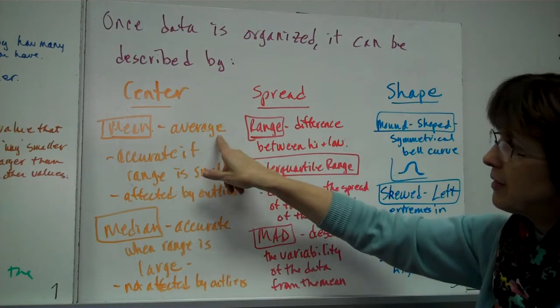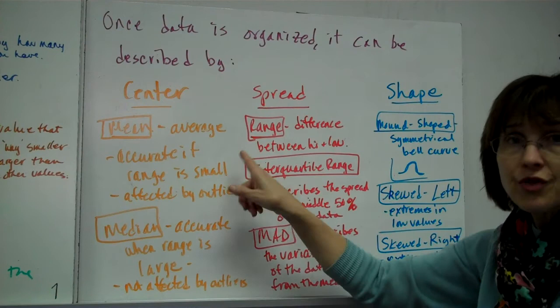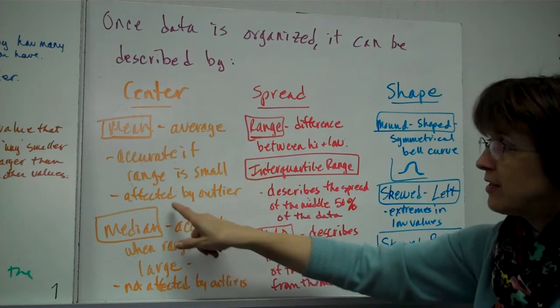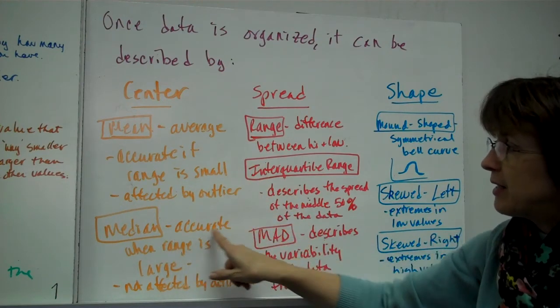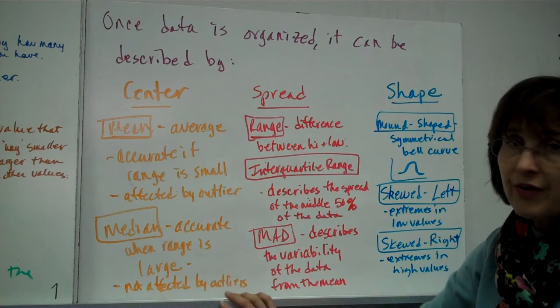The mean is the average. It's accurate if the range is small. In other words, if there's no outliers. It is affected by the outlier. The median is accurate when the range is large, and it's not affected by the outlier.